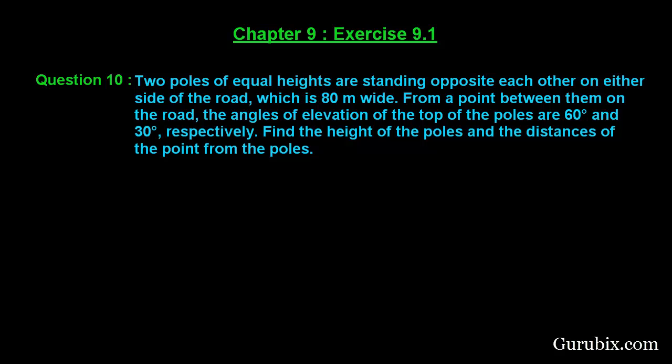Welcome friends, let us solve question number 10 of exercise 9.1 of chapter 9. The question says two poles of equal heights are standing opposite each other on either side of the road which is 80 meters wide. From a point between them on the road, the angles of elevation of the top of the poles are 60 degrees and 30 degrees respectively. Find the height of the poles and the distance of the point from the poles.